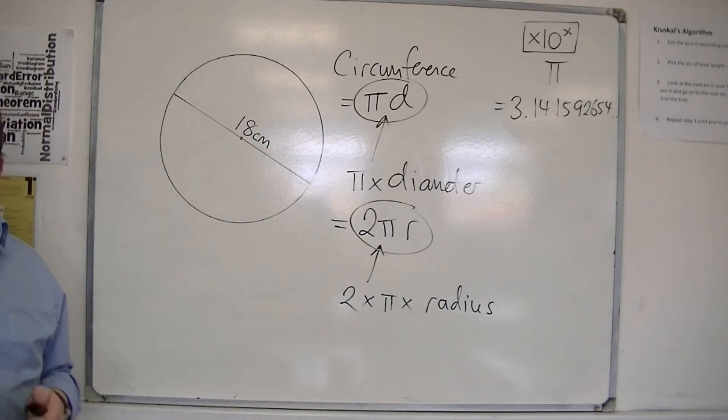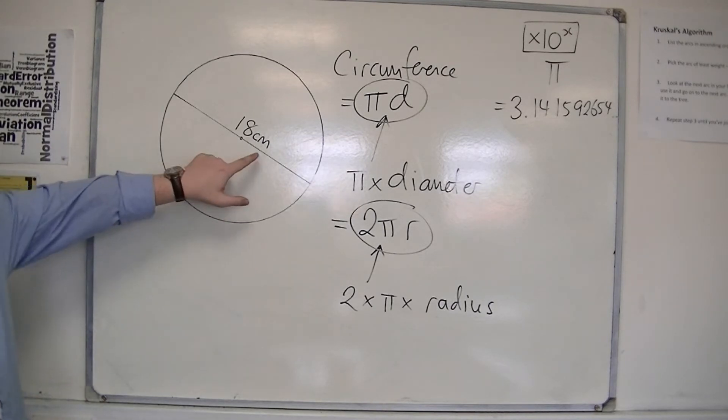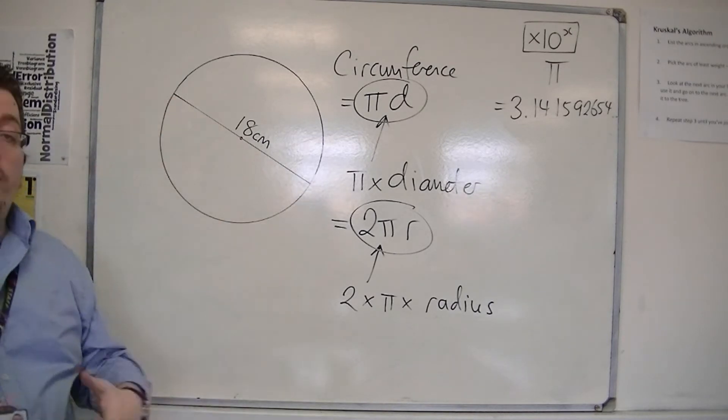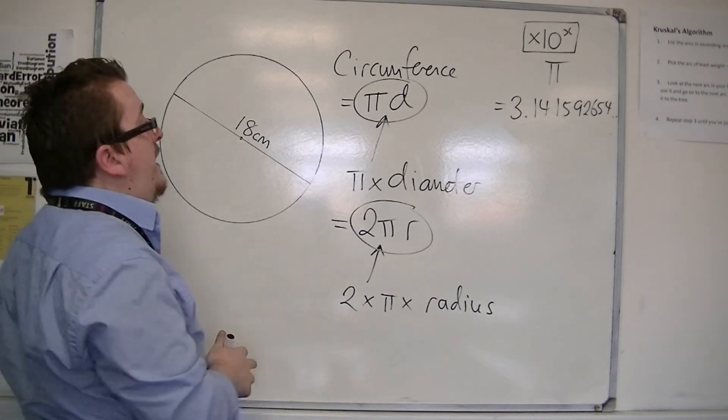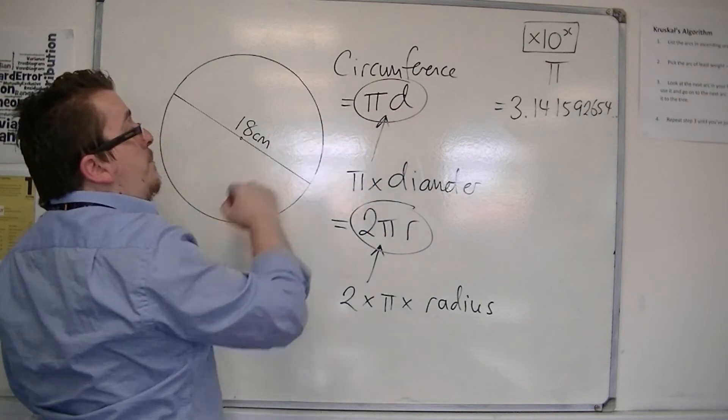For this one, for example, we have that the diameter of the circle is 18 centimeters. So, it makes sense, having already got 18 centimeters, that I would do pi times d.